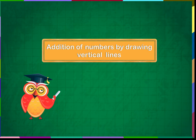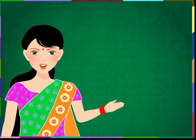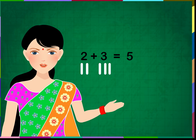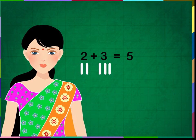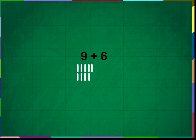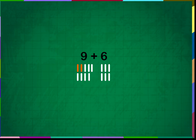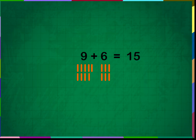Addition of numbers by drawing vertical lines. We know that we can add numbers by drawing vertical lines below the numbers and counting them all together. We have done such sums in our previous lesson. Let us do the same for bigger numbers. Add 9 plus 6. Put 9 vertical lines below 9 and 6 vertical lines below 6. Now add all the lines: 1, 2, 3, 4, 5, 6, 7, 8, 9, 10, 11, 12, 13, 14, 15. The sum is 15.